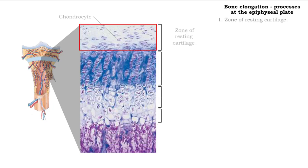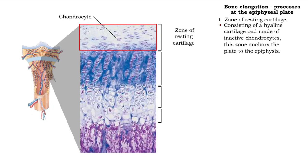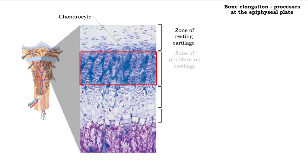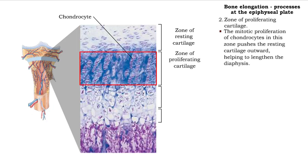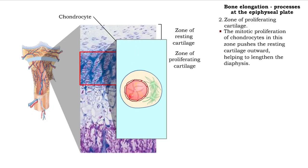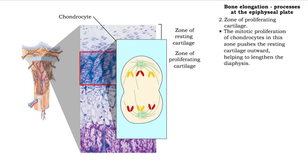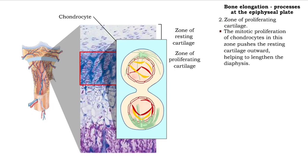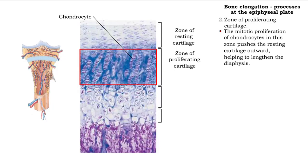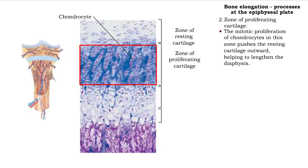The zone of resting cartilage consists of hyaline cartilage and is anchored to the epiphysis. The zone of proliferating cartilage organizes a supply of highly mitotic chondrocytes. As these cells divide and increase in number, the resting cartilage is pushed outward, helping to lengthen the diaphysis.